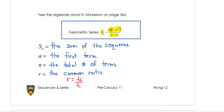So here we are. We have the variables Sn, A, N, and R. These are very similar to terms from previous lessons: Sn is the sum of the sequence, A is the first term, N is the total number of terms, and R is the common ratio. R can be found by taking the second term and dividing by the first term.